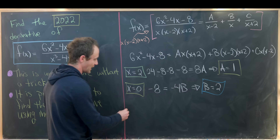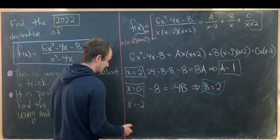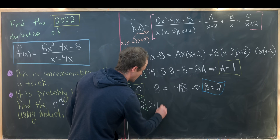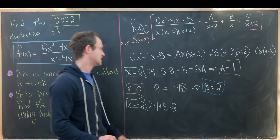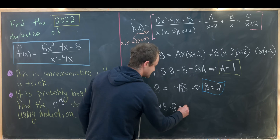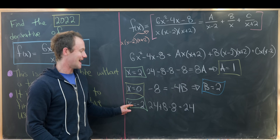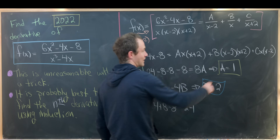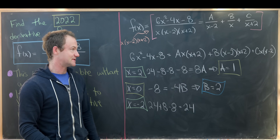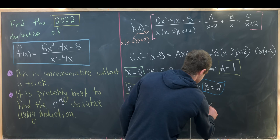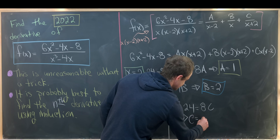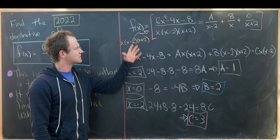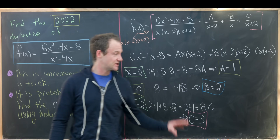Finally, setting x equals negative 2: the left side gives 24 plus 8 minus 8, which equals 24. The first and second terms on the right cancel, leaving C times (negative 2) times (negative 4), which is 8C. So C equals 3. We've now determined A is 1, B is 2, and C is 3.